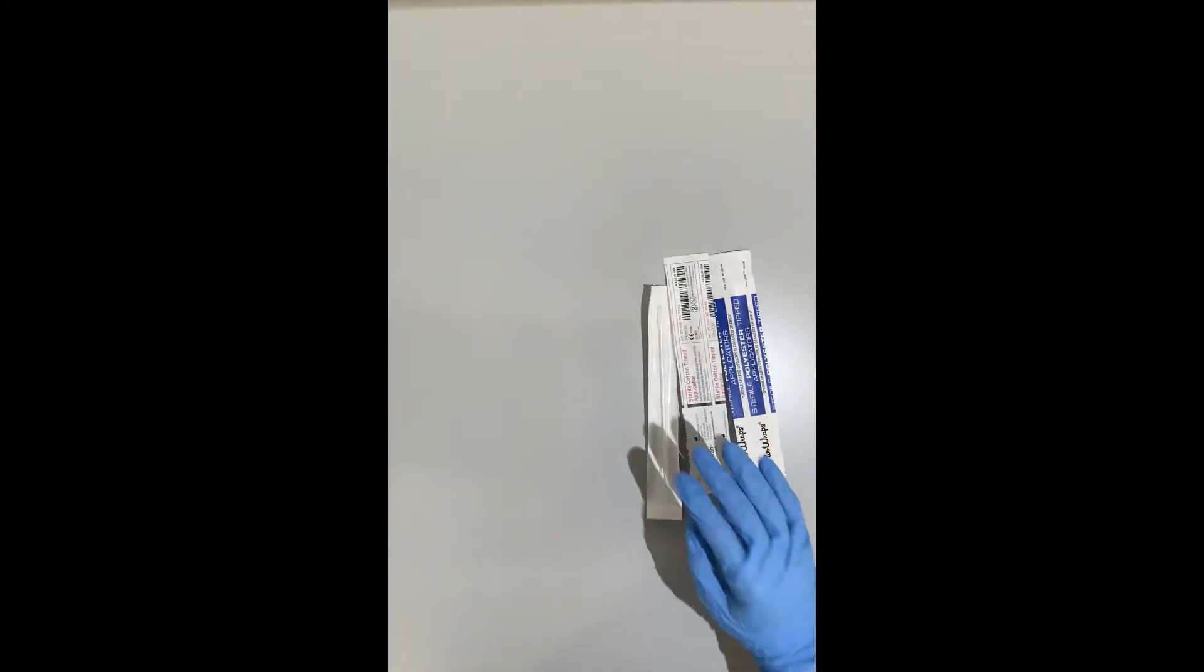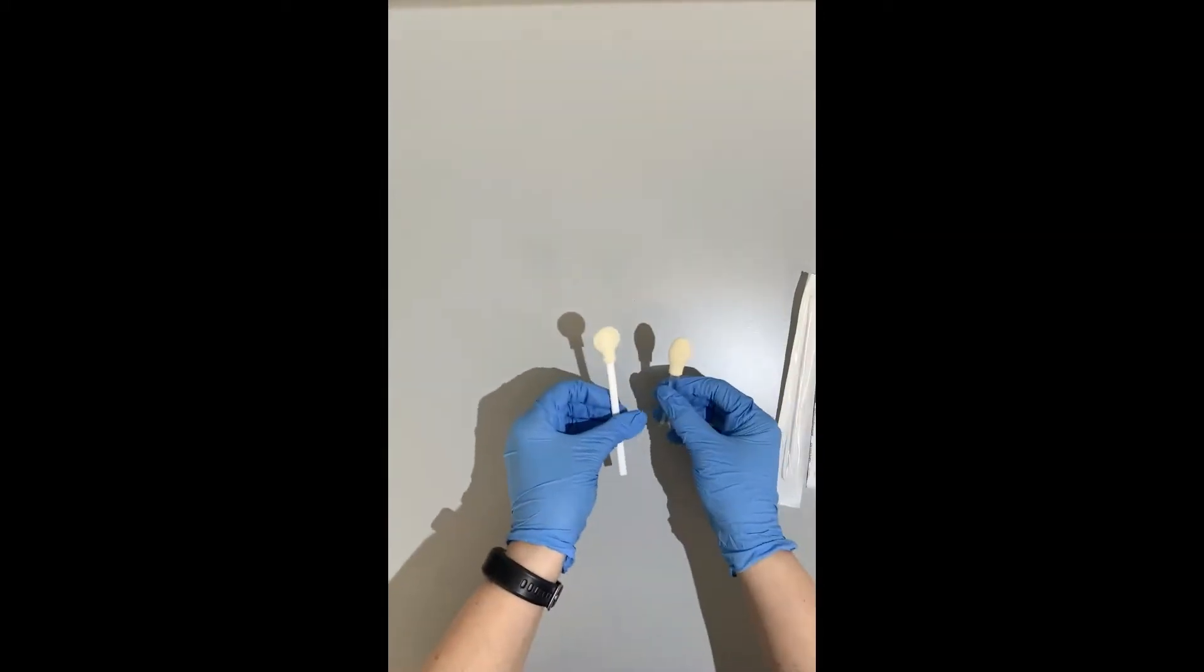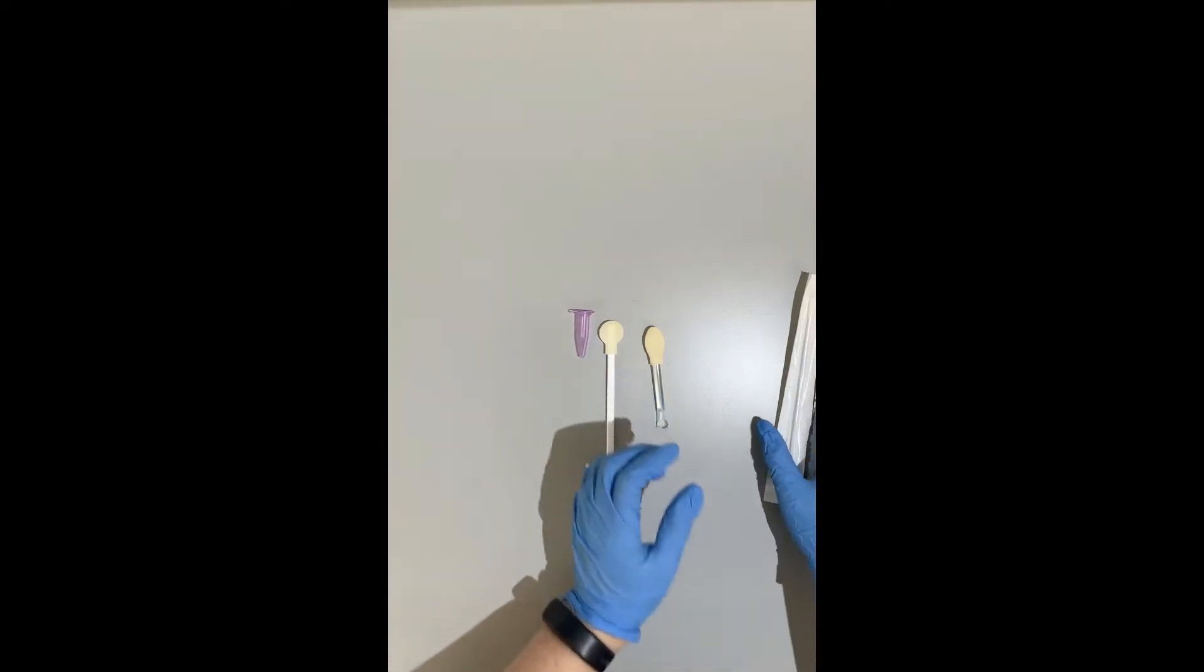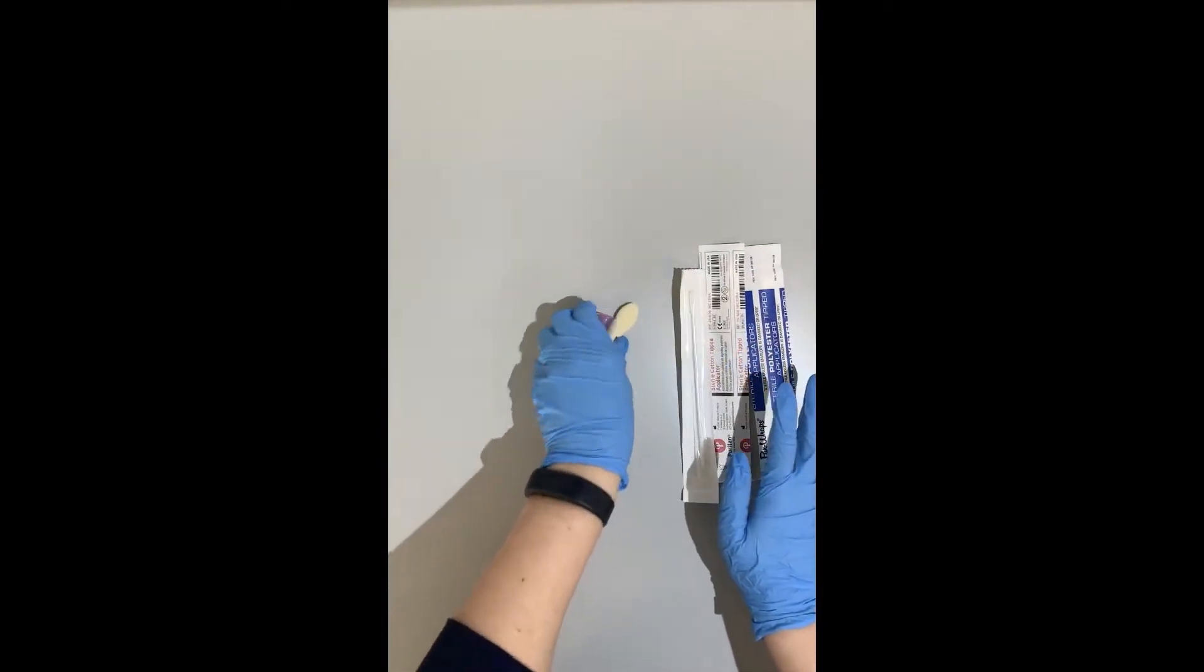We do not suggest using any type of foam swabs with these larger heads on them because the items of evidence that we put in tubes are this size. There's no way to fit this large stick and foam head into a tube this size, so we recommend using the smaller types of swabs.